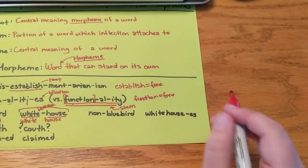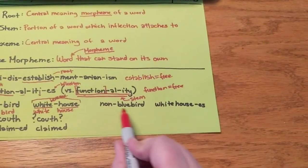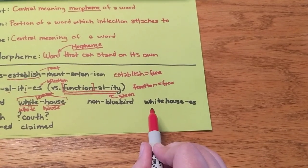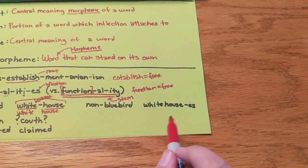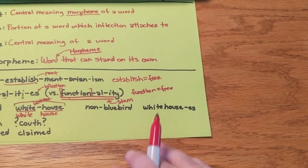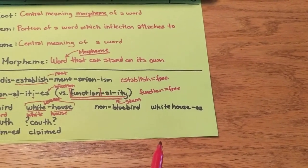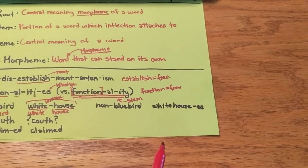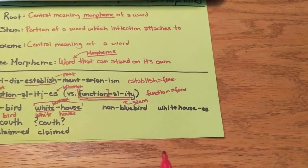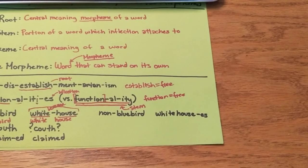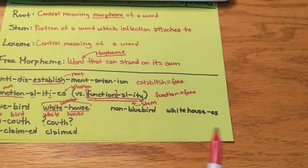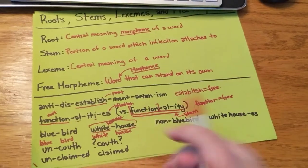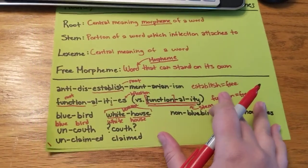You can tell that these are lexemes because you can do derivation on them as a unit — so a non-bluebird or white houses. You could say they're selling miniature white houses in the gift shop. That's how you can tell it's a lexeme that works together and forms an independent meaning from the meaning of the two roots used independently.